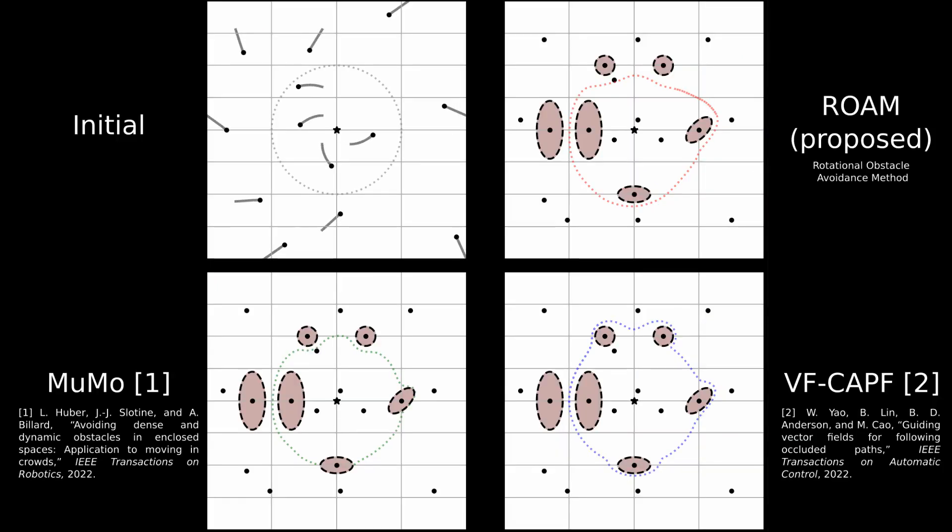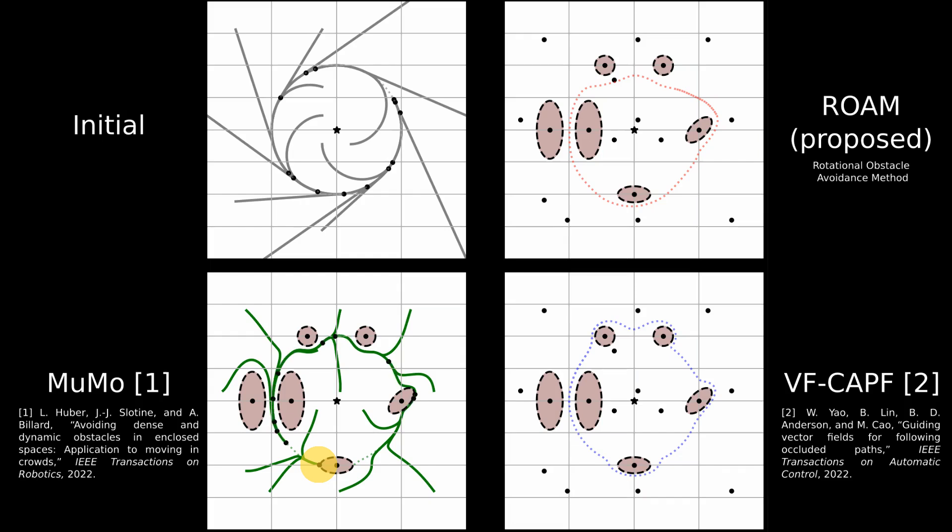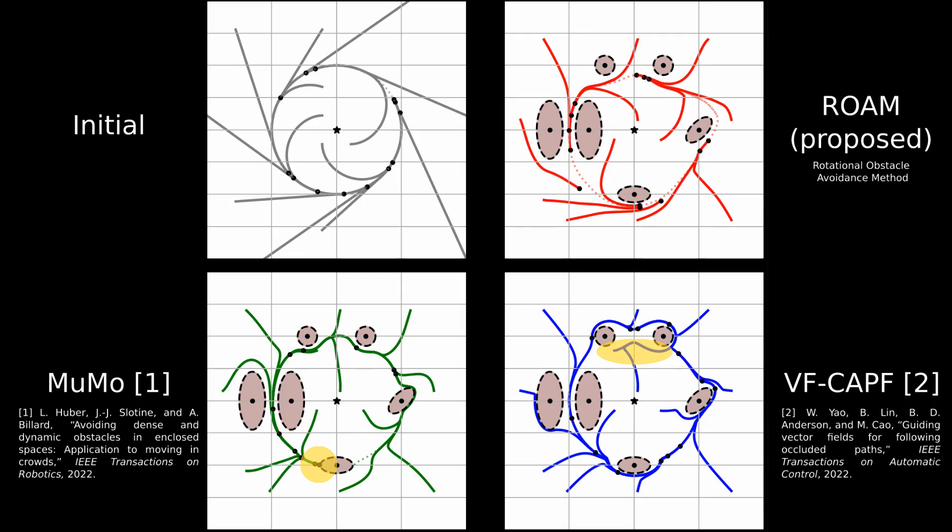We conduct a comparison between the proposed algorithm and two baselines when trying to follow an initial circular dynamics in gray in presence of six obstacles. The multiple modulation method can create trajectories which get stuck in local minima on the surface of an obstacle. Methods using local rotations of vector fields create regions around the obstacles where the flow is almost inverted. The proposed approach, rotational avoidance method, short ROAM, ensures the absence of saddle points on the surface of the obstacles. It shows additionally higher similarity to the initial dynamics.